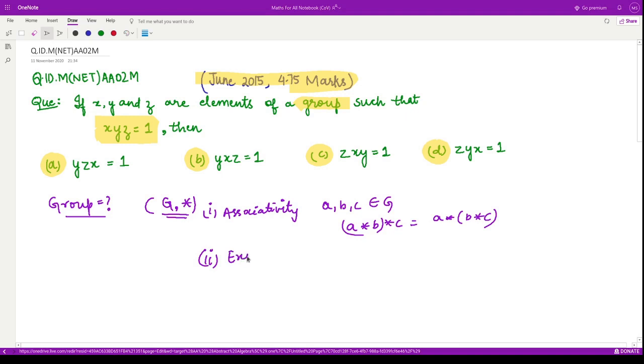The second property is that there exists an identity element, which we call e. That means for every element g that belongs to G, when that element is operated with the identity element, it gives back the element itself. Or we can also say that when the identity element is operated with element g, it gives back g.